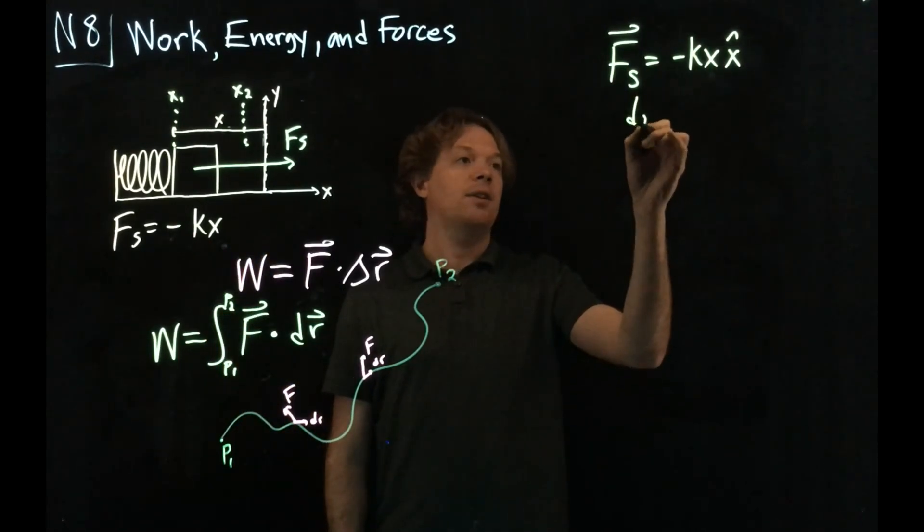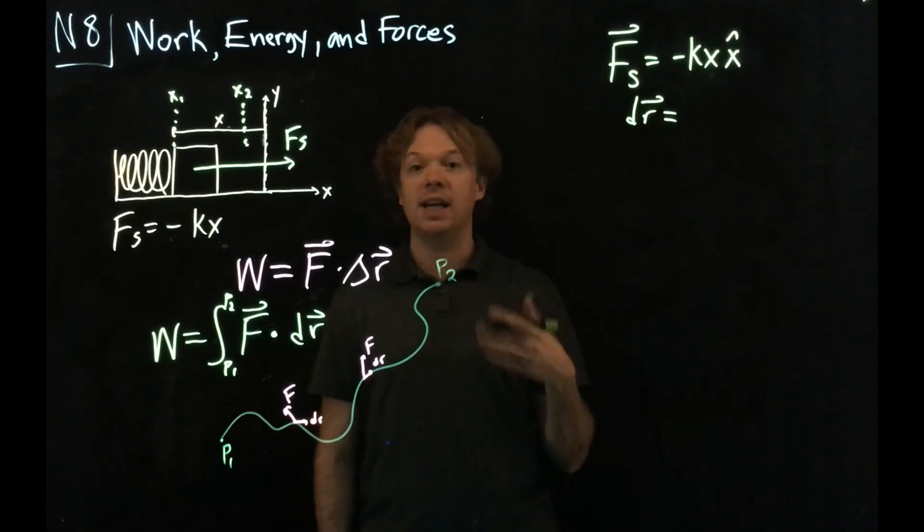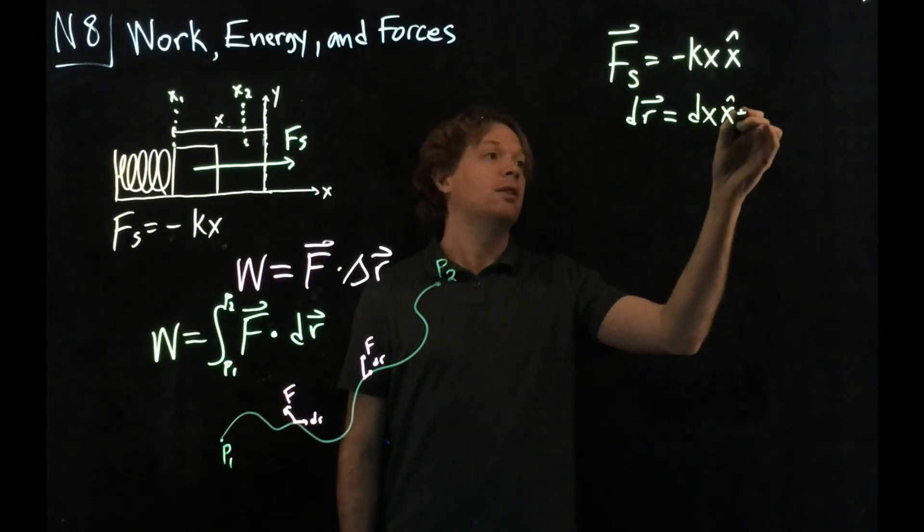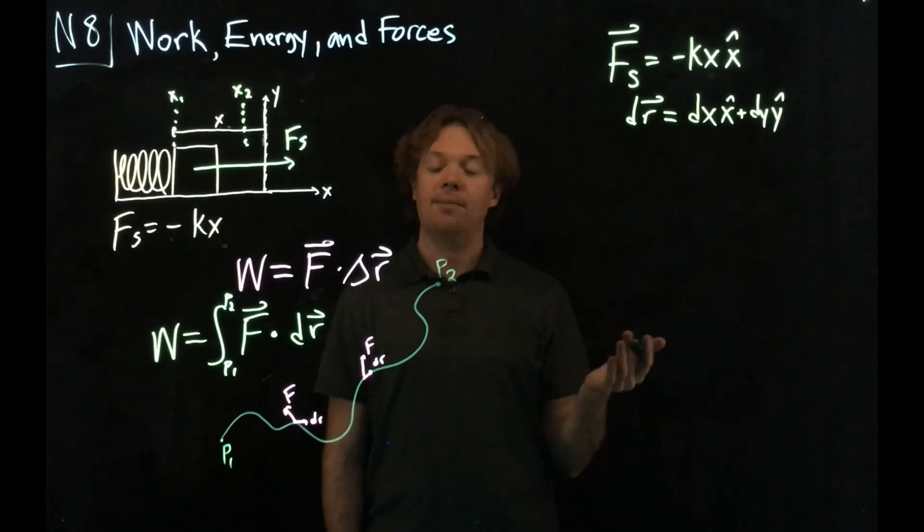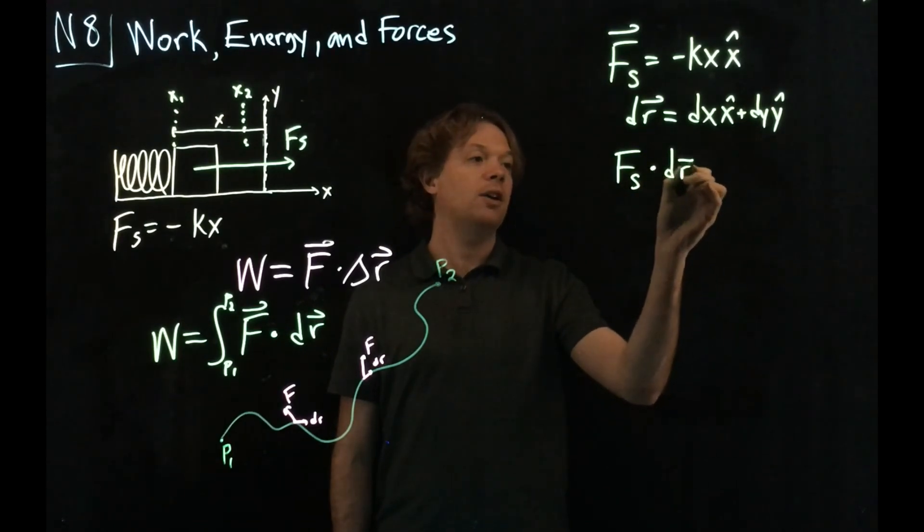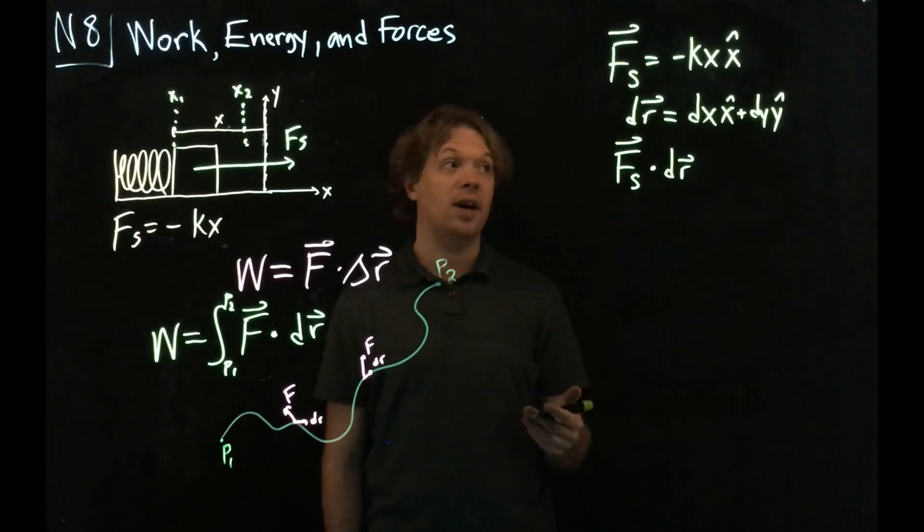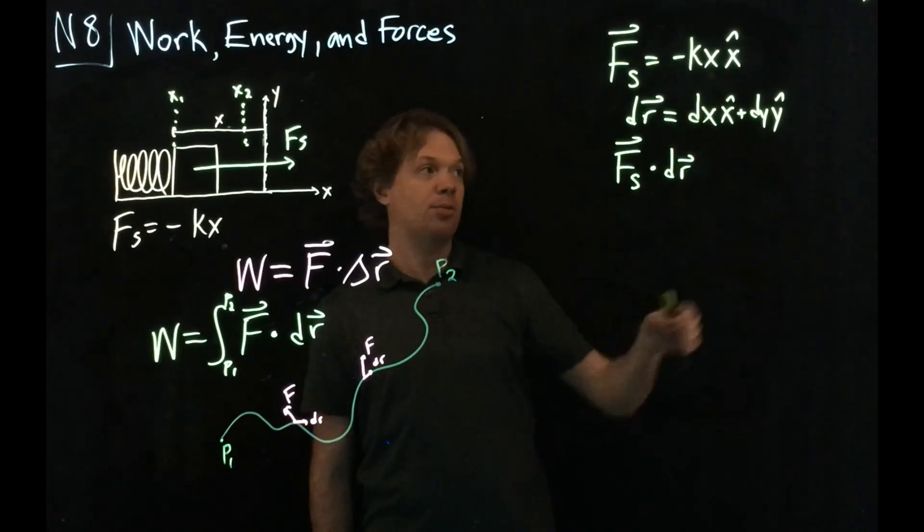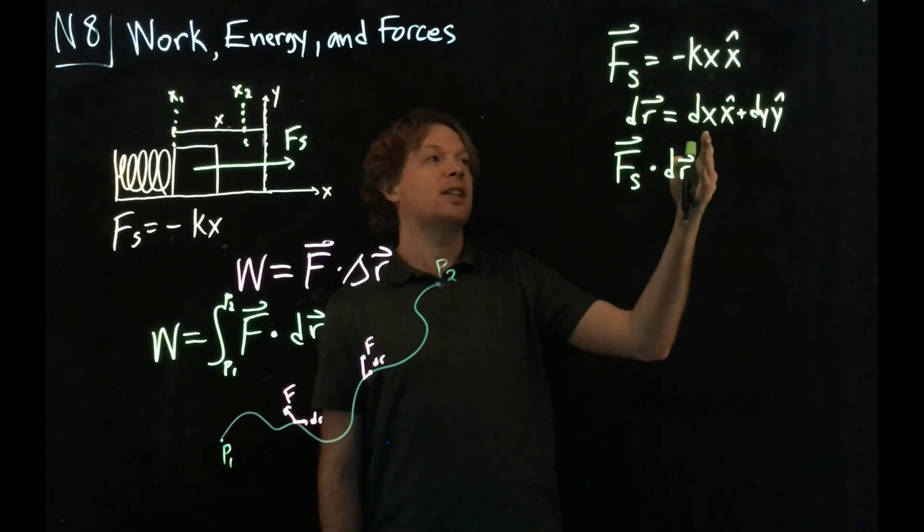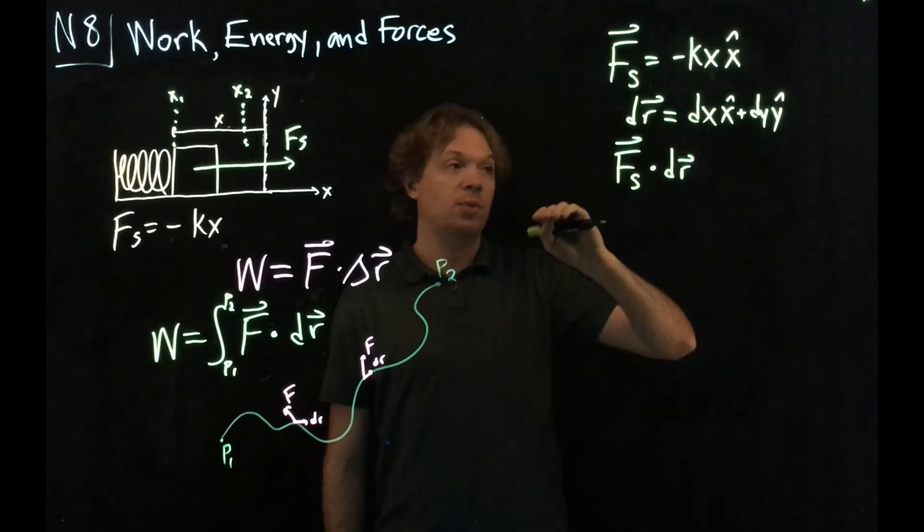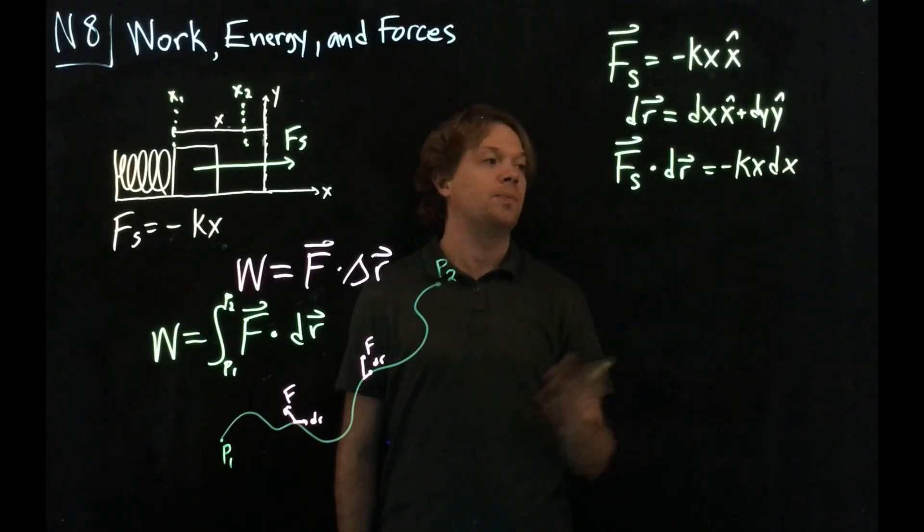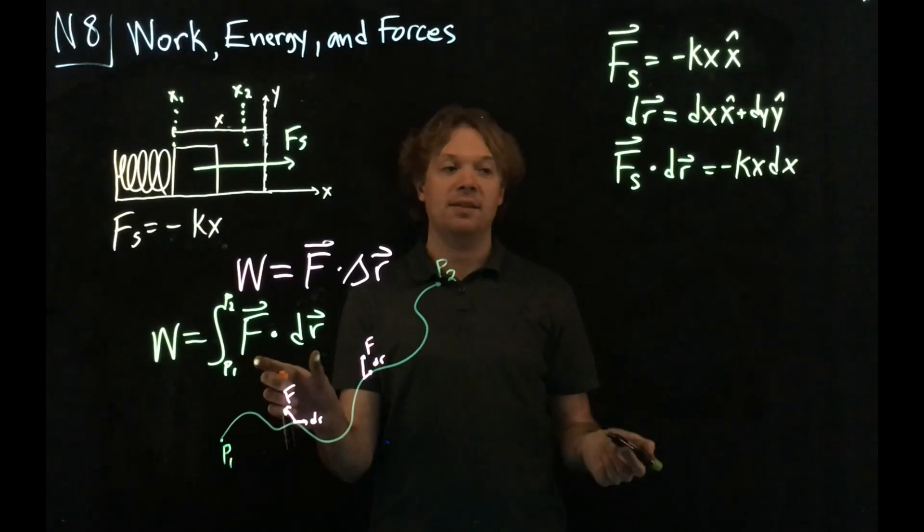Now I need to write dr as a vector. The nice thing about dr is dr is just a generic infinitesimal element, so I can write dx as the infinitesimal in the x direction, x hat, plus dy, infinitesimal in the y direction, y hat. Now I need to calculate what Fs dot dr is. Remember the definition of the dot product. Take the product of the x's and add the product of the y's. In this case, there's no Fs in the y direction, so that term goes away. We just get the product of the x direction, the spring force, and the x direction of dr. That's minus kx dx. This dot product is simply minus kx dx.